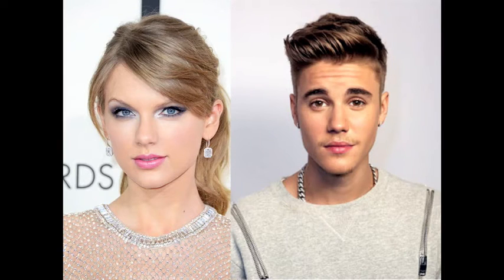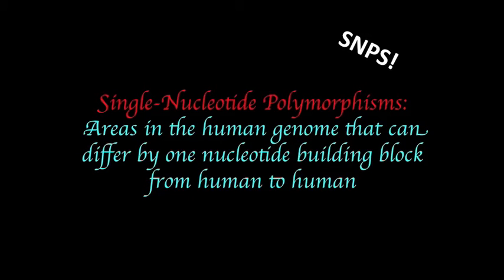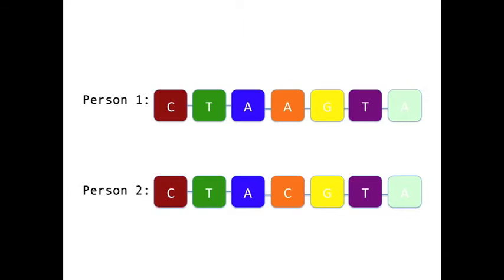A lot of the differences between humans come from single nucleotide polymorphisms, also called SNPs, which are areas in the human genome that can differ by one nucleotide building block from human to human. In other words, some humans might have an A right there but others might have a C in that same spot, and these differences account for why humans have varied skin tones, eye color, hair color, and facial structures among other features.